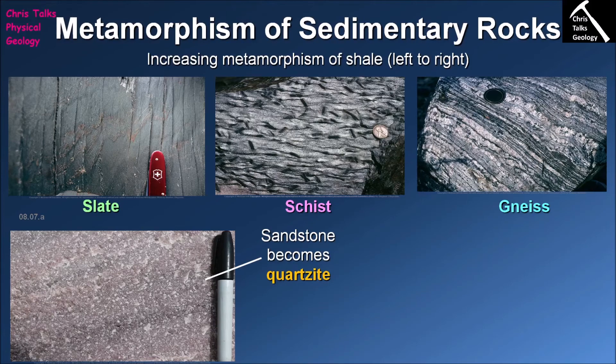Now we'll deal with two types of metamorphic rock which form from sedimentary rocks but not from muddy sedimentary rocks. The first is quartzite, and the protolith for a quartzite is a sandstone. In general, quartzites aren't particularly good for tracking metamorphic conditions simply because most sandstones are dominated by the mineral quartz, and when you metamorphose a rock rich in quartz it doesn't really do very much.